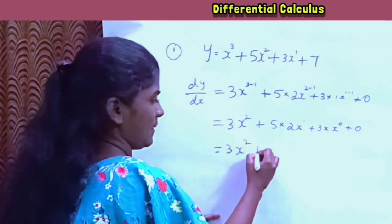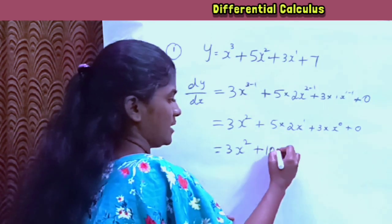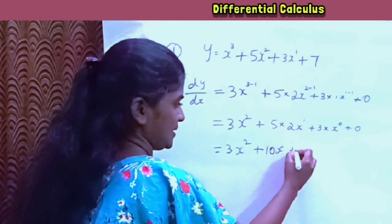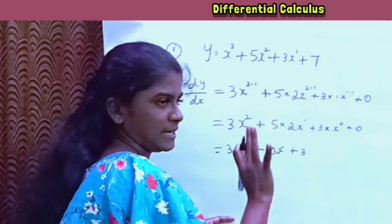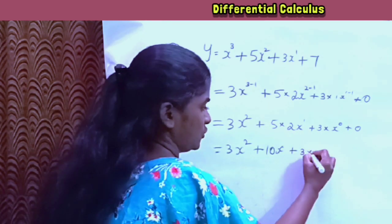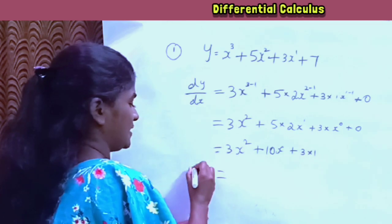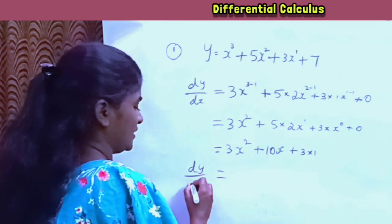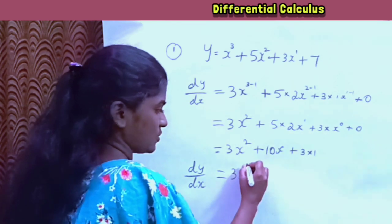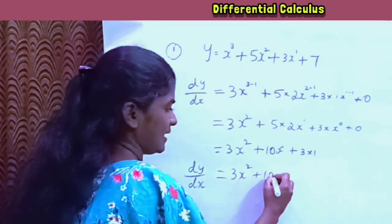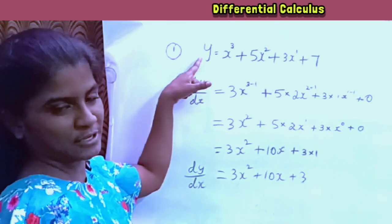Next step: 3x square, plus 5 into 2 which is 10, so 10x, plus 3. Anything to the power 0 is 1, so 3 into 1 is 3. The constant term gives 0. Final answer: dy divided by dx is equal to 3x square plus 10x plus 3.